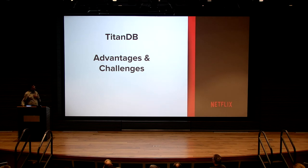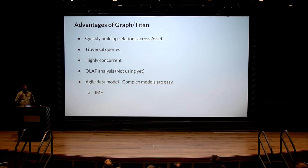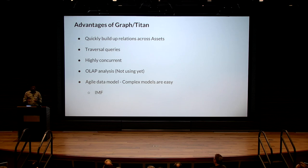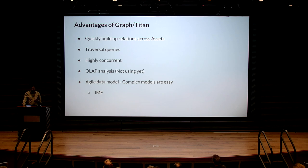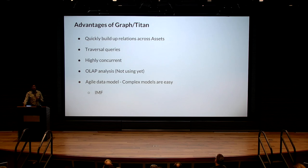The advantages of using Titan and graph databases: it's easy to quickly build up relations across assets — we have this concept of a group of assets with relations that we can identify as one entity or one subgraph as an asset. It has traversal queries, it's highly concurrent, it has OLAP analysis capability we'll use in the future, and it has an agile data model. Complex models like IMF — the Interoperable Master Format, Hollywood's standard for delivering digital assets to third parties — are very easy because it's basically a concept of multiple nodes creating one subgraph.